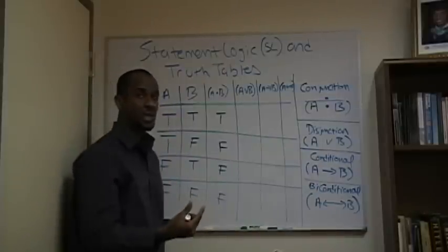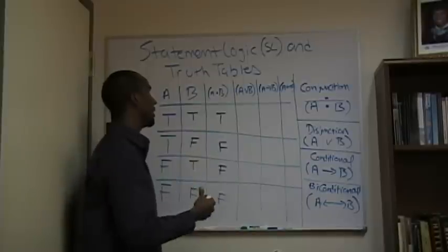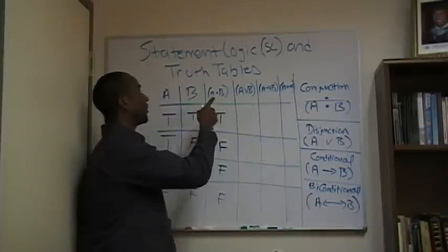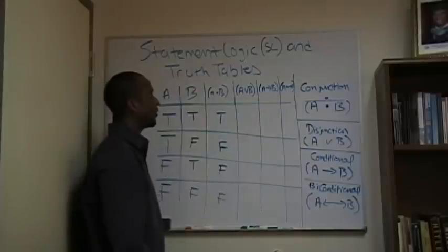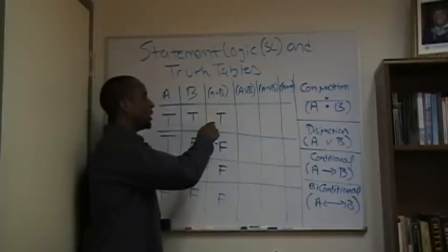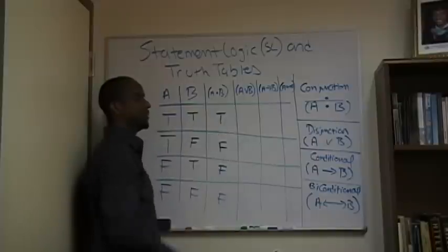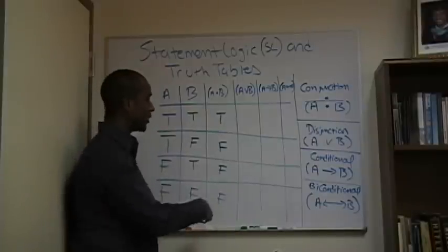So I can make the further claim: anytime I'm checking or attempting to determine, using truth tables, the truth or falsity of statement logic which concerns a conjunction, only when both variables A and B are true will the statement be true. The rest will be false.